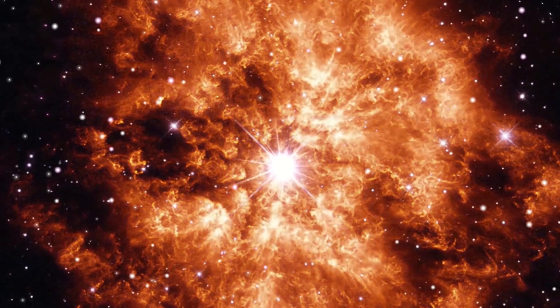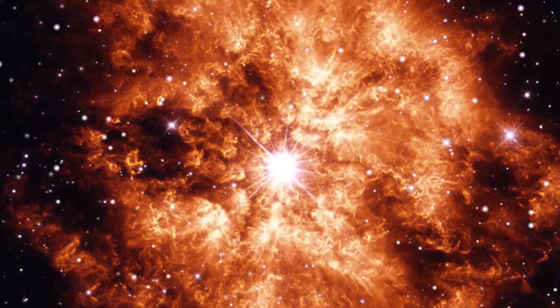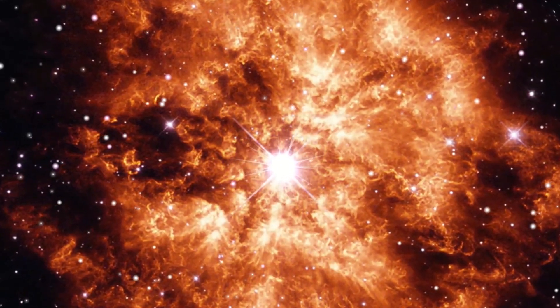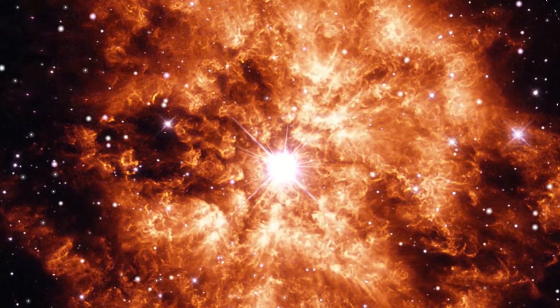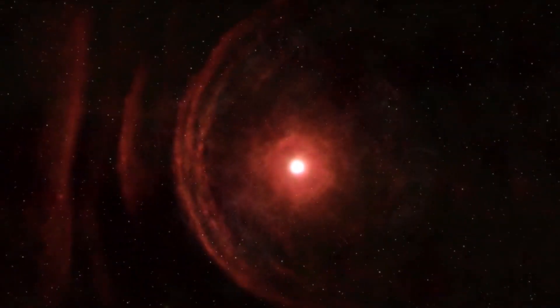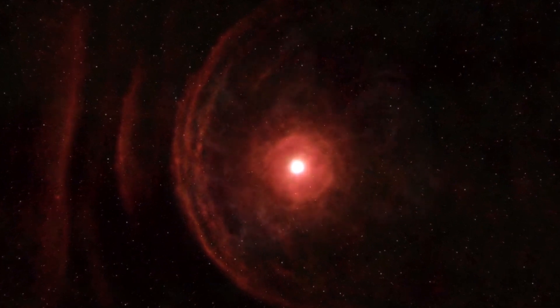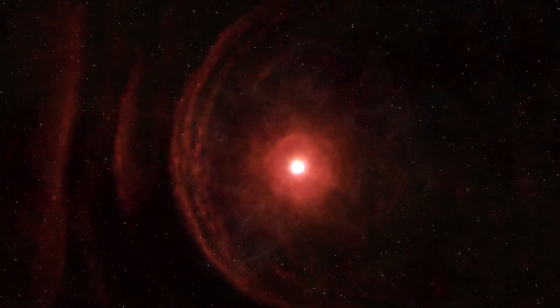A supernova may occur in one of two ways. In a Type 1 supernova, a star accumulates matter from a nearby neighbor until a runaway nuclear reaction ignites. A Type 2 supernova happens when a star runs out of nuclear fuel and collapses under its gravity.